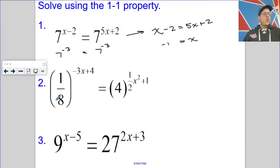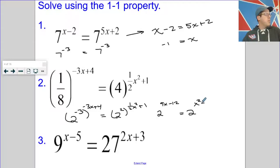Now, if two bases are not the same but are compatible, we can play around with them a little bit. So for example, I could write this as 2 to the negative 3 to the negative 3x plus 4 equals 2 squared to the 1 half x squared plus 1. Now that these have the same base, I can multiply the exponents together.